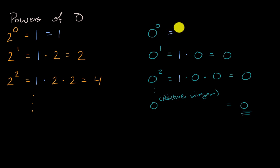I would start with a one and then multiply it by zero zero times. Or in other words, I just wouldn't multiply it by zero, in which case I'm just left with the one, that zero to the zeroth power should be equal to one.